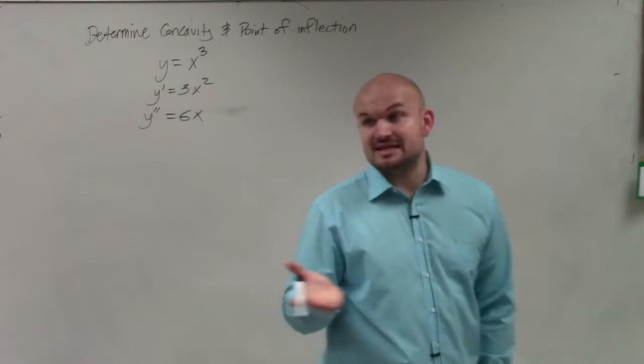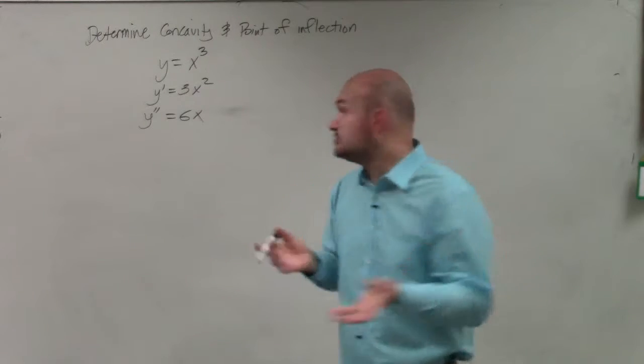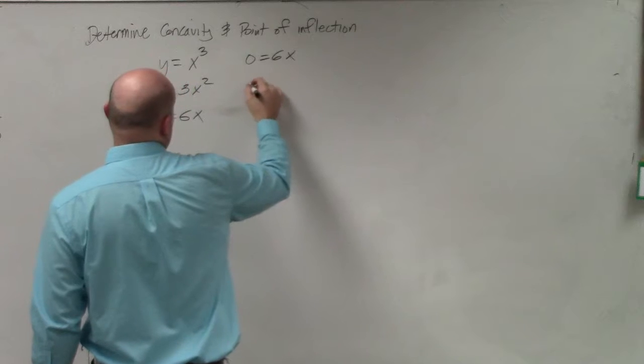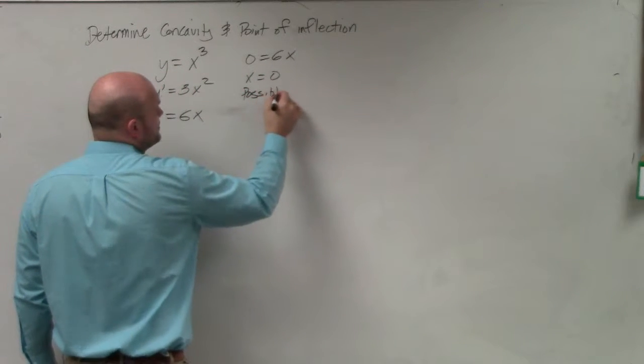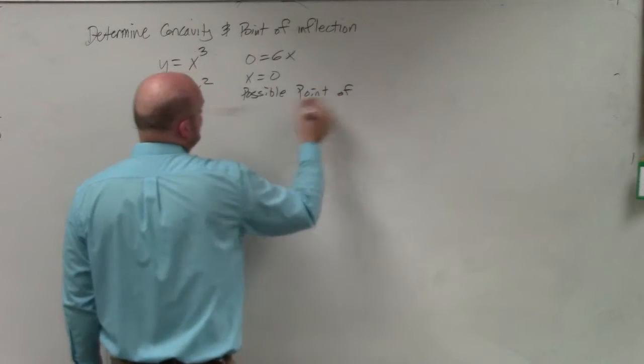Now, I need to identify my point of inflection, right? Before I can test for concavity, I want to know where it possibly would change. So therefore, I'm going to set 0 equal to 6x. And I could say x equals 0. And that is my possible point of inflection.